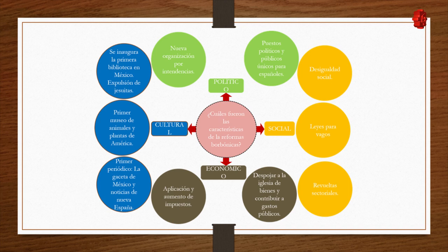Also expelled due to these reformas borbónicas was Fray Servando Teresa de Mier, who played a very important role in the third stage of the independence process. The first museum of animals and plants of America was inaugurated. Also inaugurated was the first newspaper: the Gaceta de México y Noticias de la Nueva España.